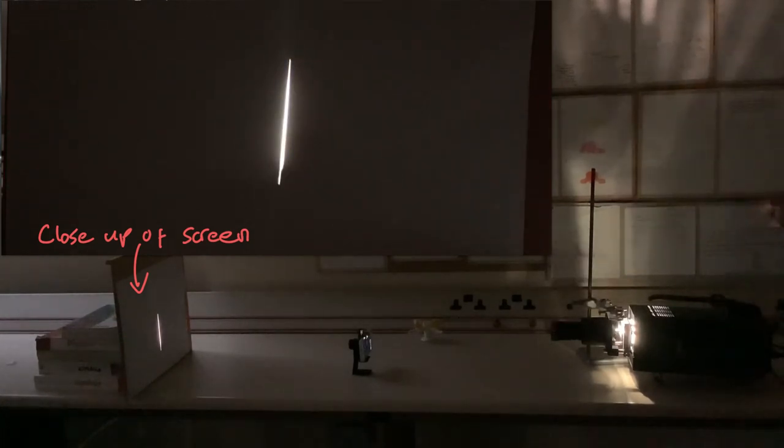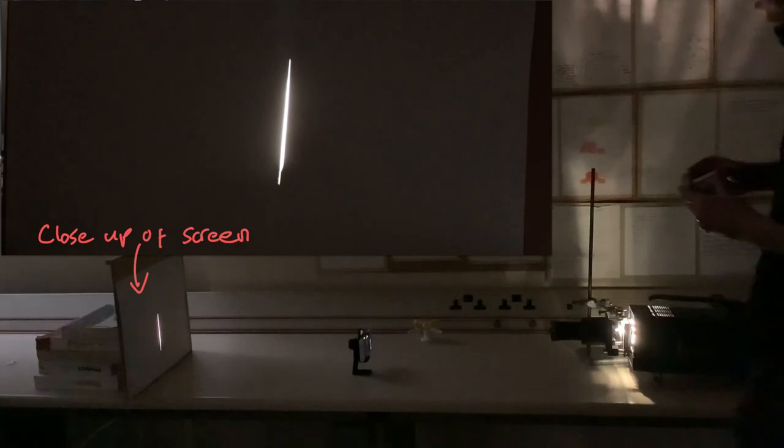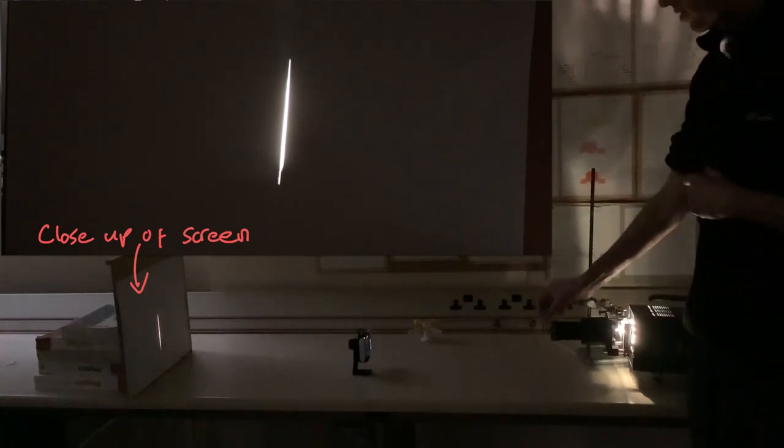And if we try 600 lines per millimeter what do you think is going to happen? We are still getting a spectra but it's off the screen so you can't see it.